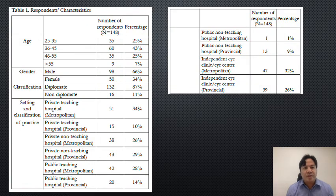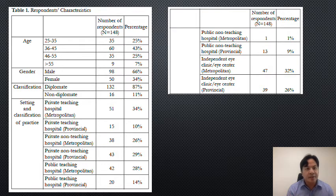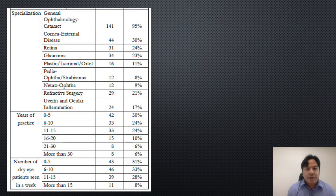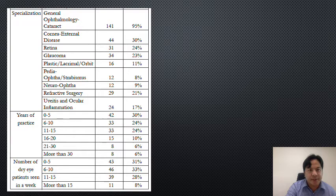The next two slides show the demographics the study collected. They collected age, which had four categories. Gender and their classification — whether they are diplomate or non-diplomate — was a binary scale. The setting of clinical practice had about 10 sub-choices, specialization had nine choices, years in practice was divided into about six choices, and the number of patients seen weekly was also subdivided.